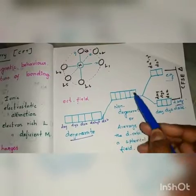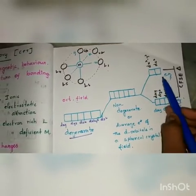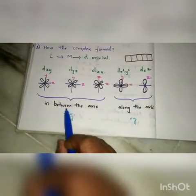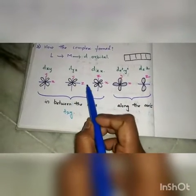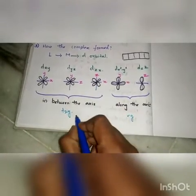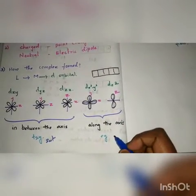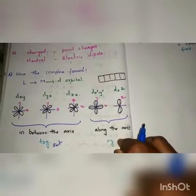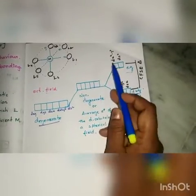These non-degenerate orbitals will be split into two types: one is eg and another one is t2g. The t2g set contains orbitals whose lobes are present in between the axes — that is dxy, dyz, and dzx. The eg set contains orbitals whose lobes are present along the axes — that is dx²-y² and dz². This classification is according to spectroscopy.